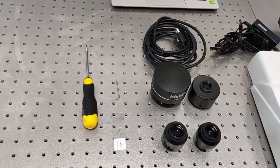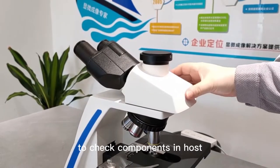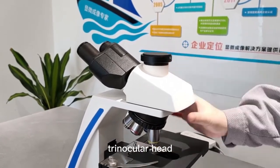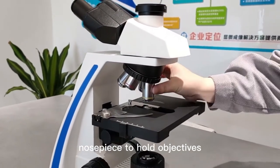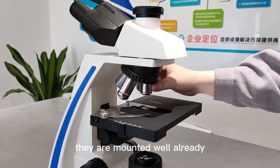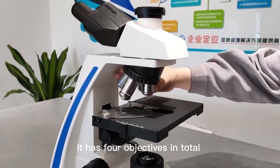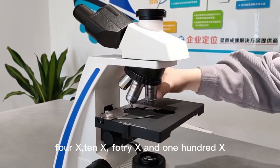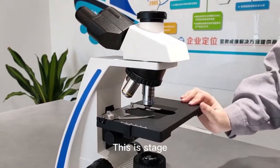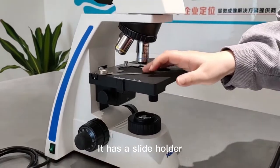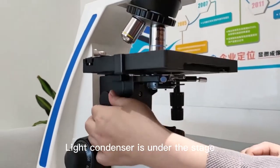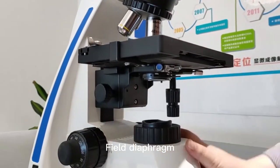Then let us check the components in the host. There is a trinocular head and nosepiece to hold objectives—they are mounted well already. It has four objectives in total: 4x, 10x, 40x, and 100x. This is the stage with a slide holder. The light condenser is under the stage, and here is the field diaphragm.